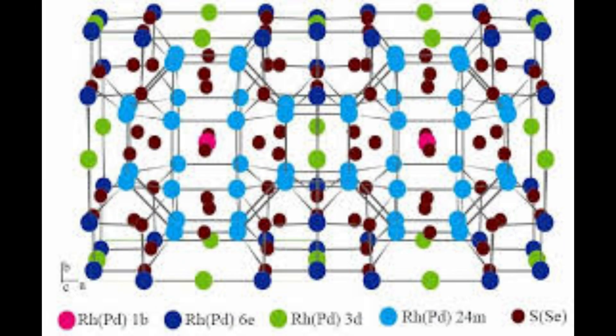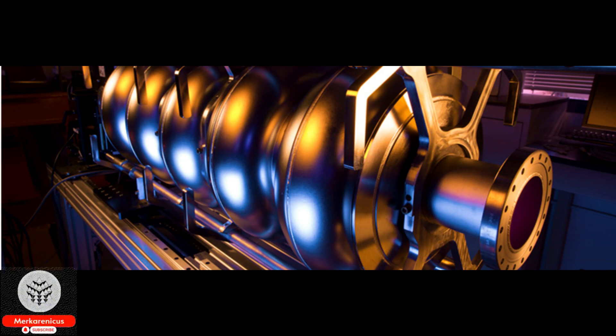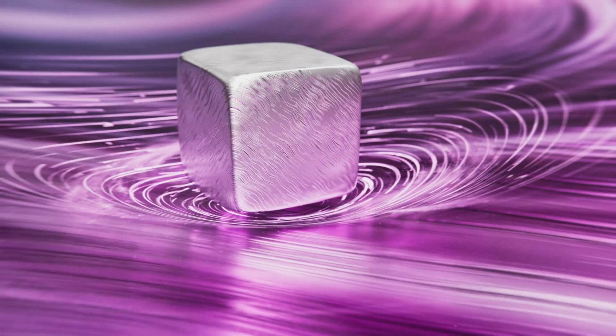The critical temperature represents the uppermost temperature at which a material can exhibit superconducting properties. During the 1980s, a remarkable find was made by scientists, the existence of unconventional superconductors, which possess significantly higher critical temperatures.